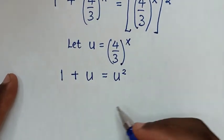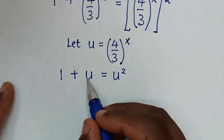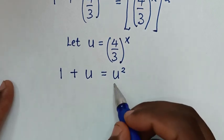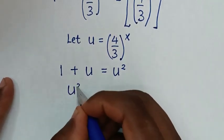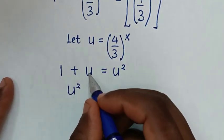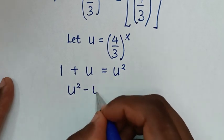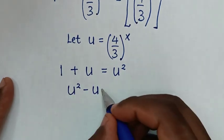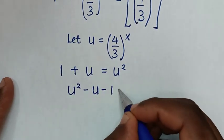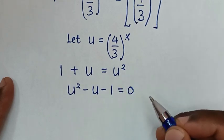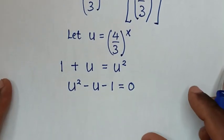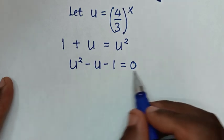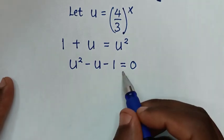In the next step we will rearrange: take u to this side and 1 to this side, so it will be u squared minus u minus 1 is equal to 0.